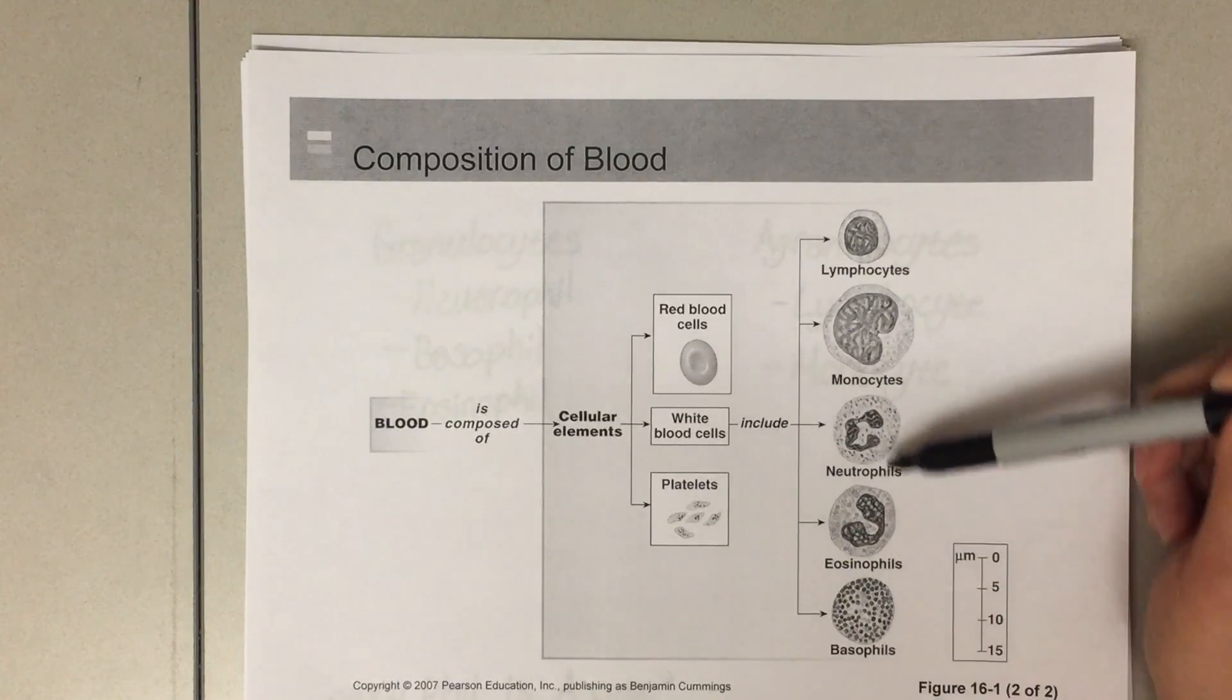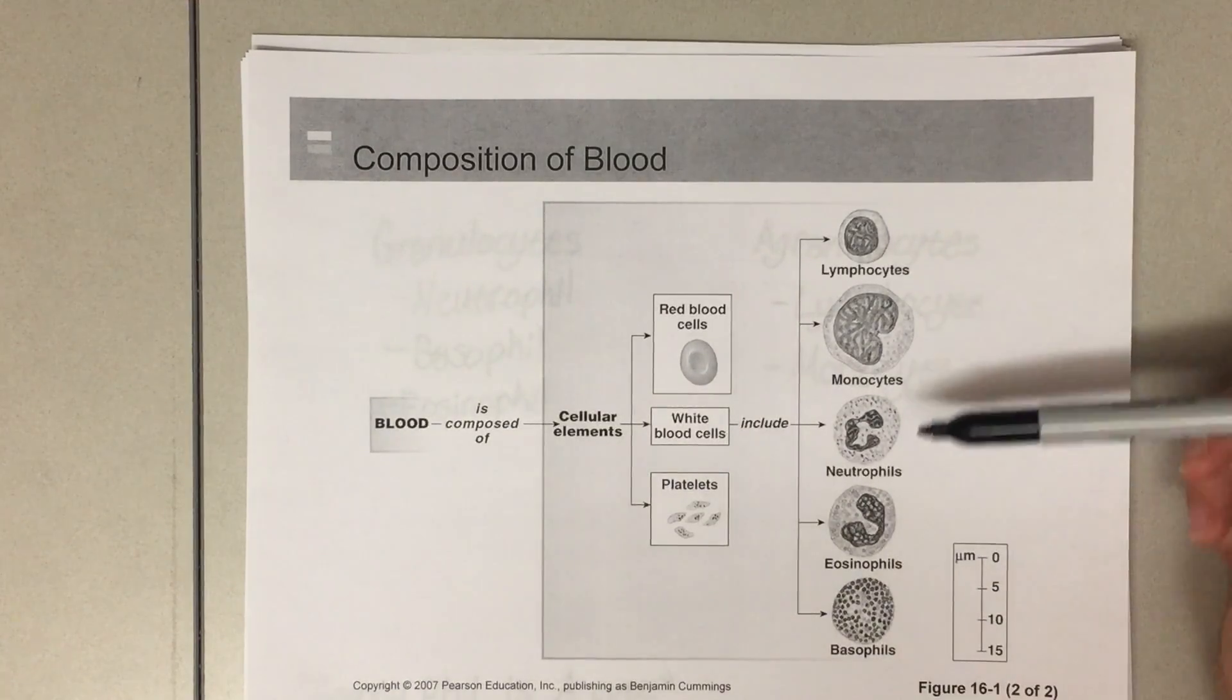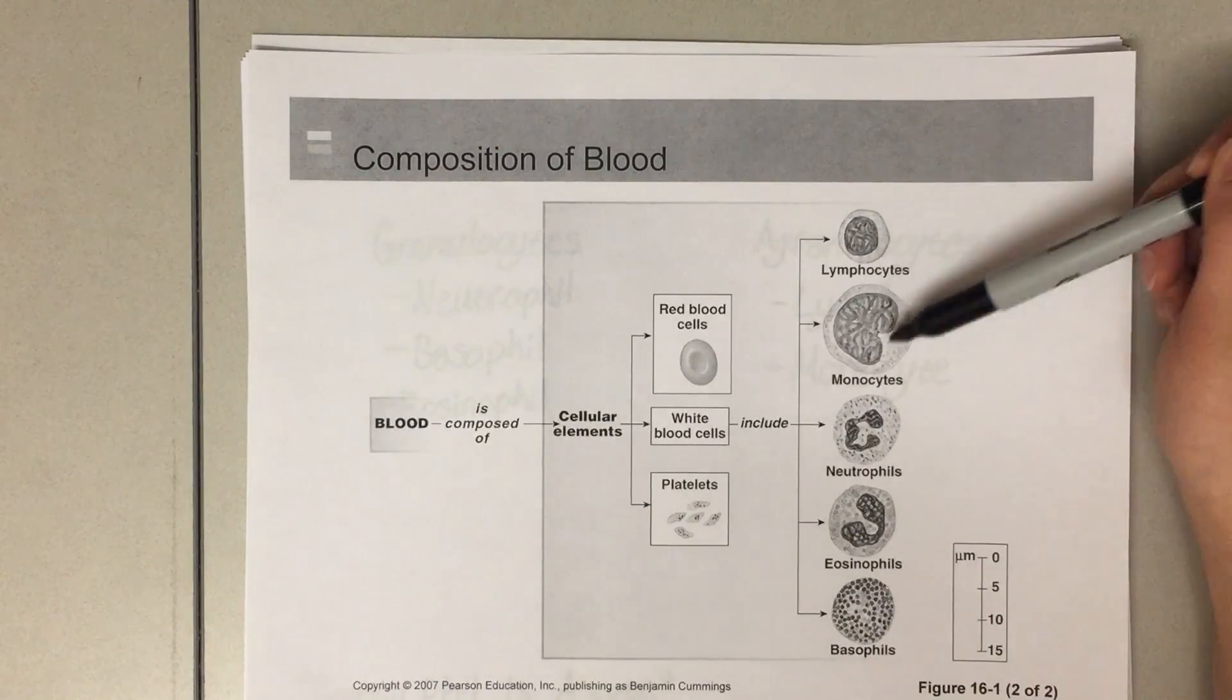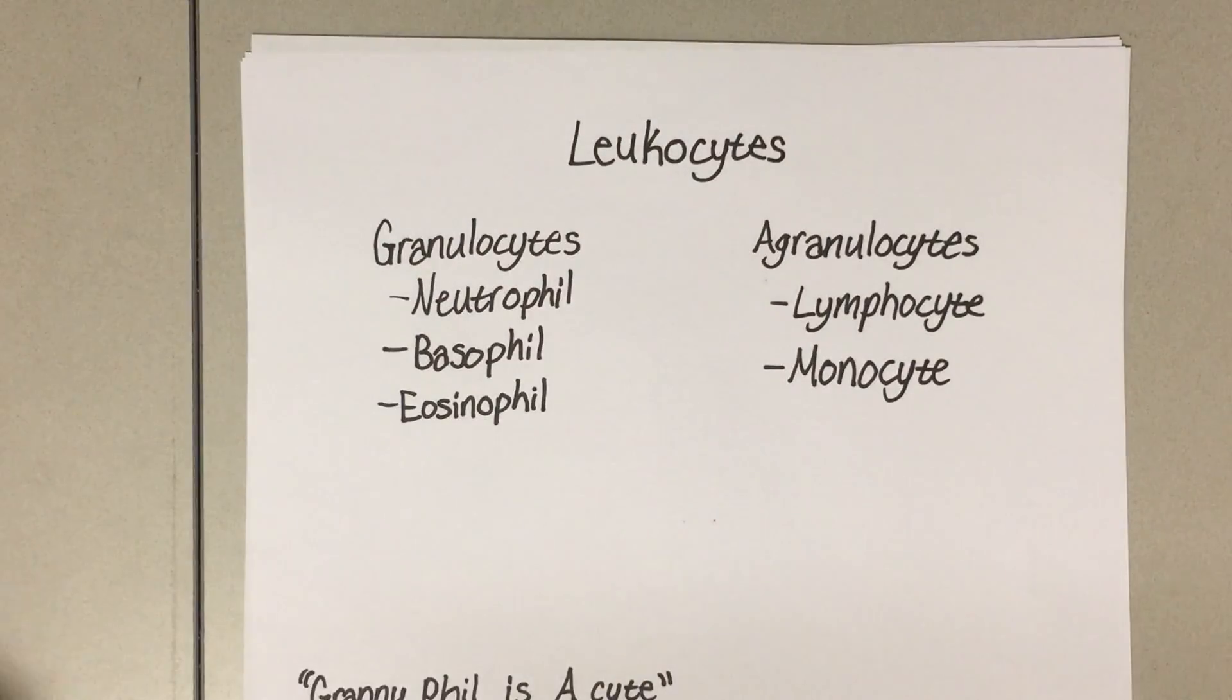With our leukocytes, there's a mnemonic to remember which ones are granulocytes and which are agranulocytes. We remember "granny phil is a site" because all of the granulocytes (granny) end in phil.